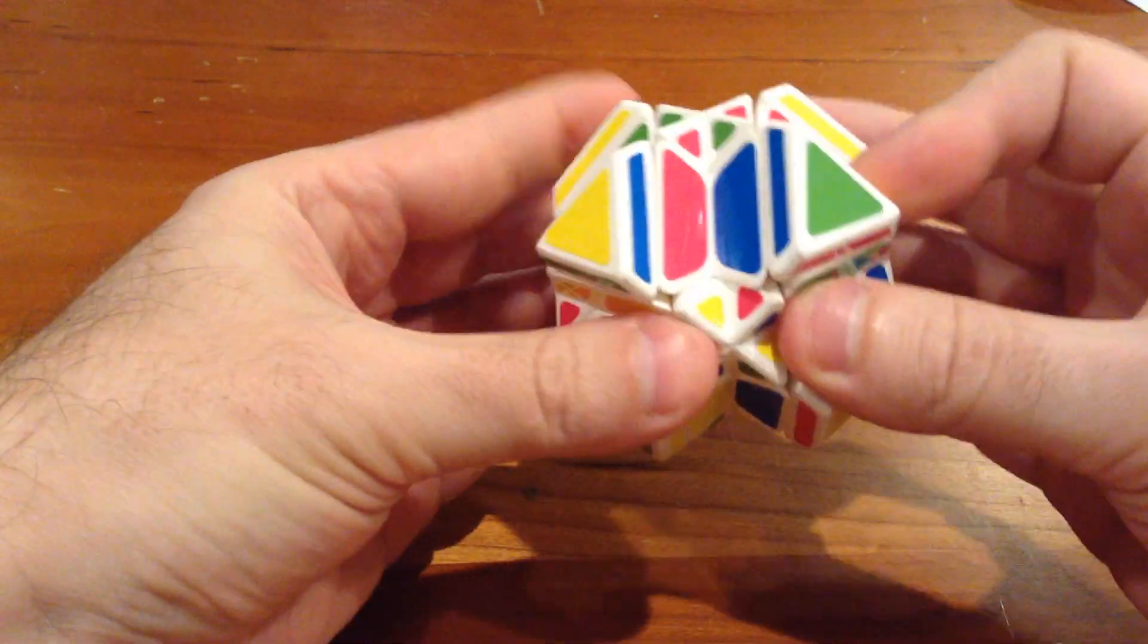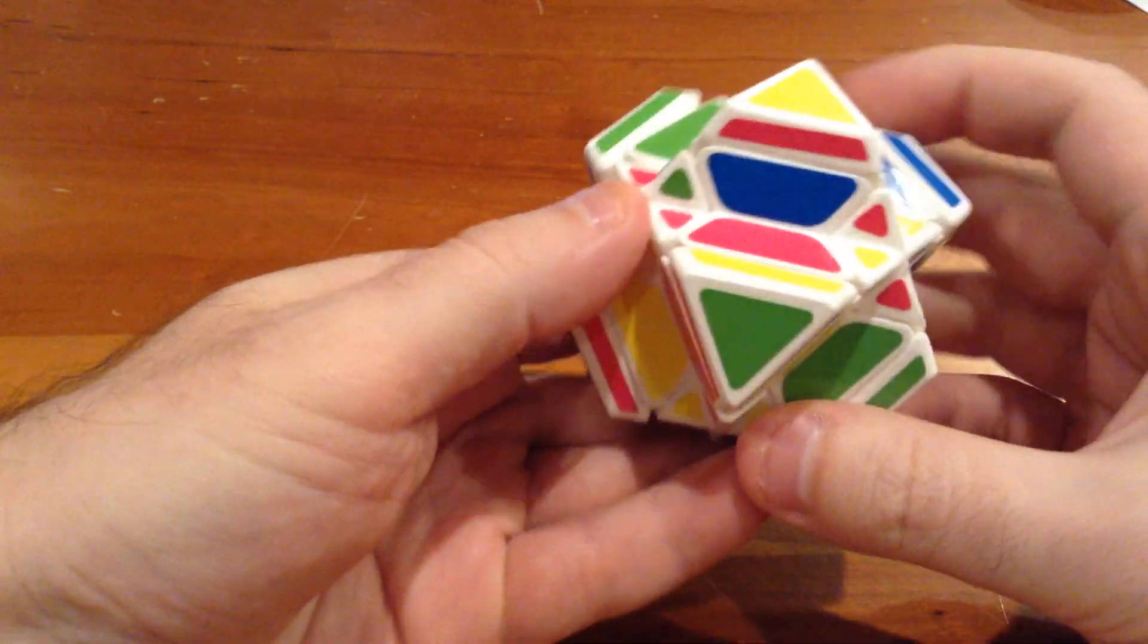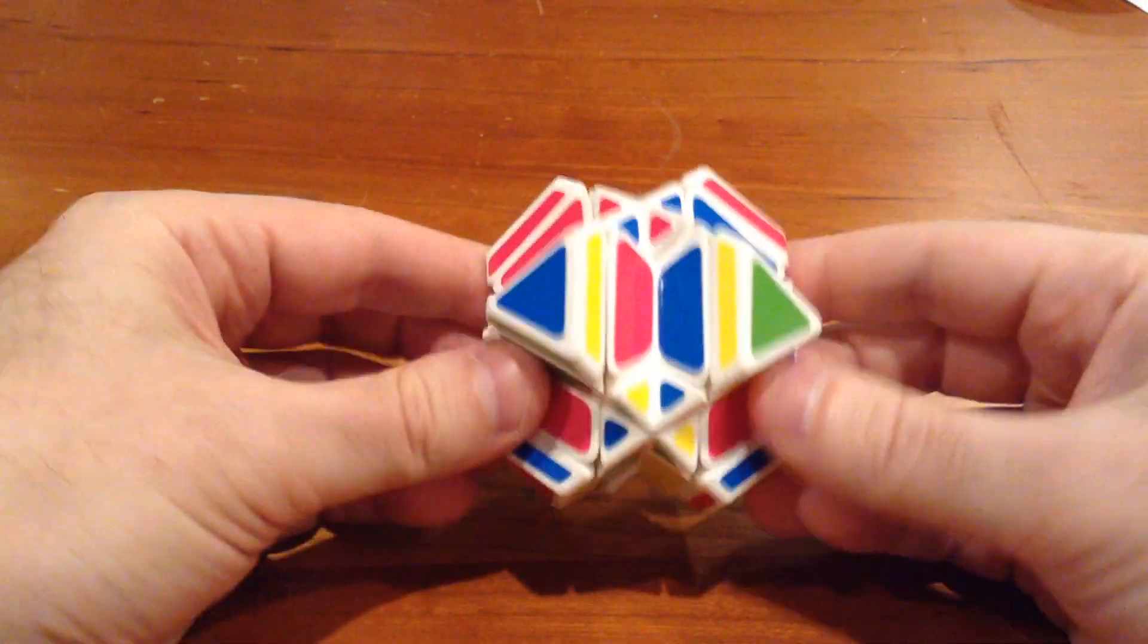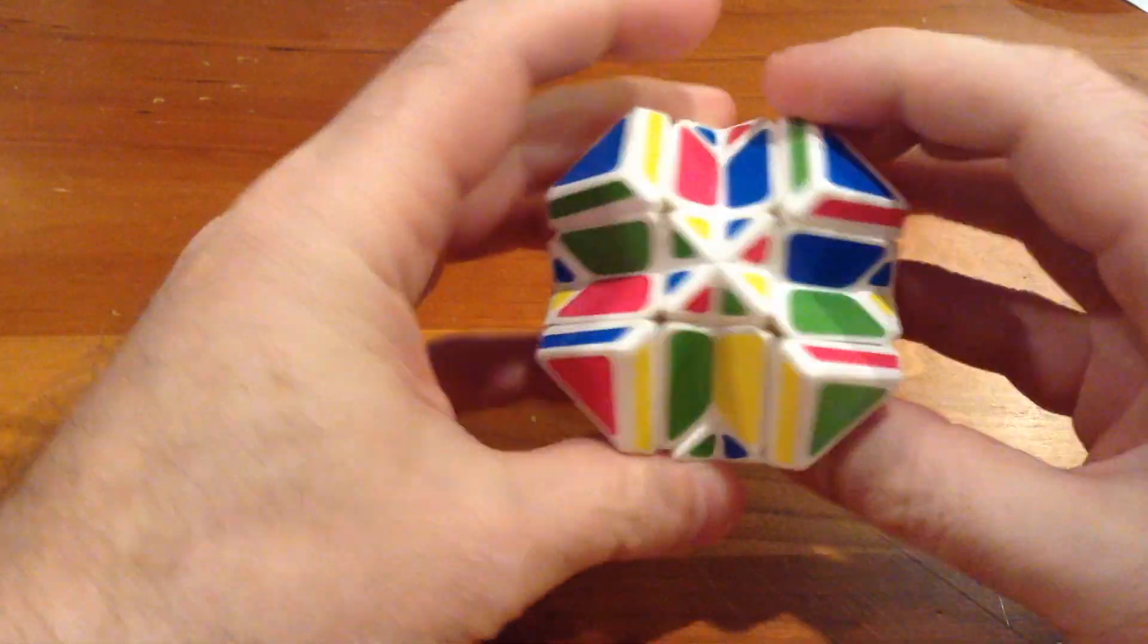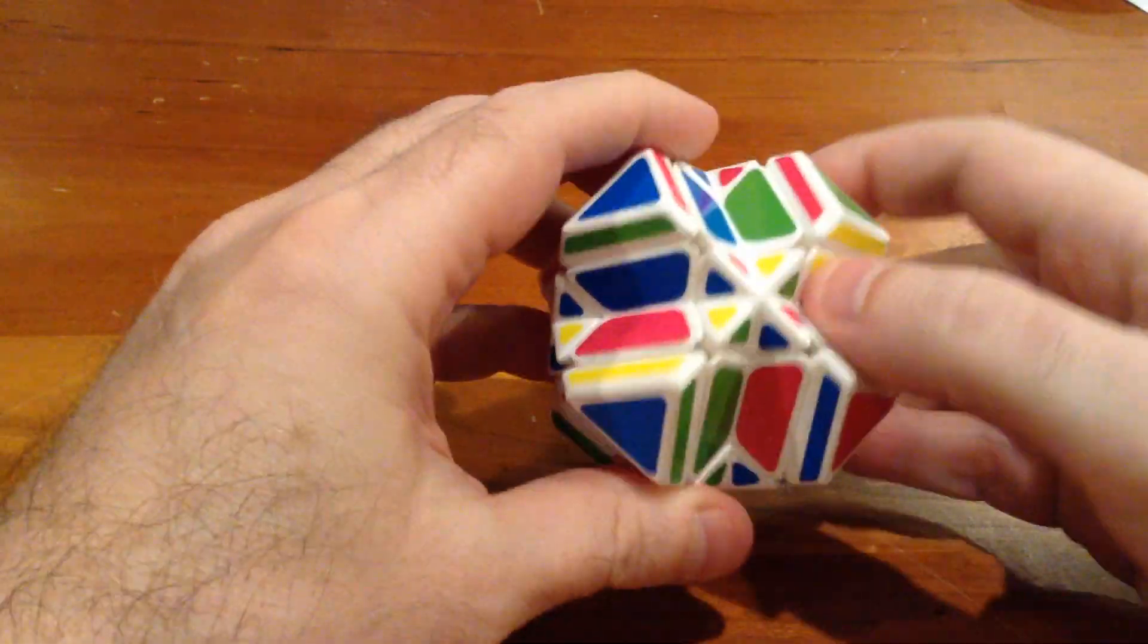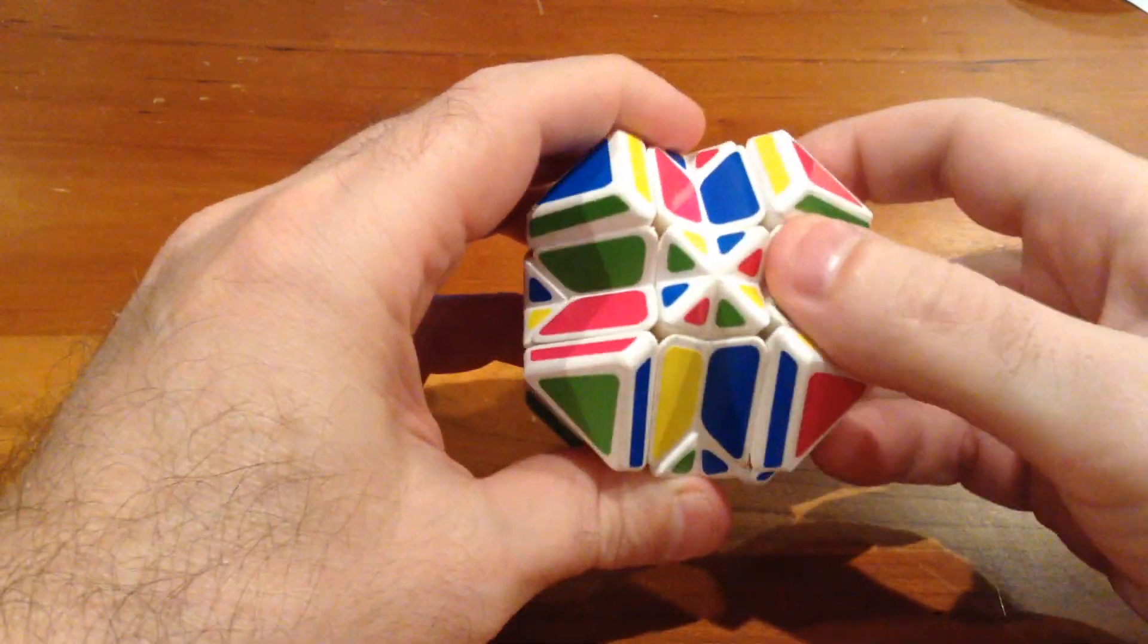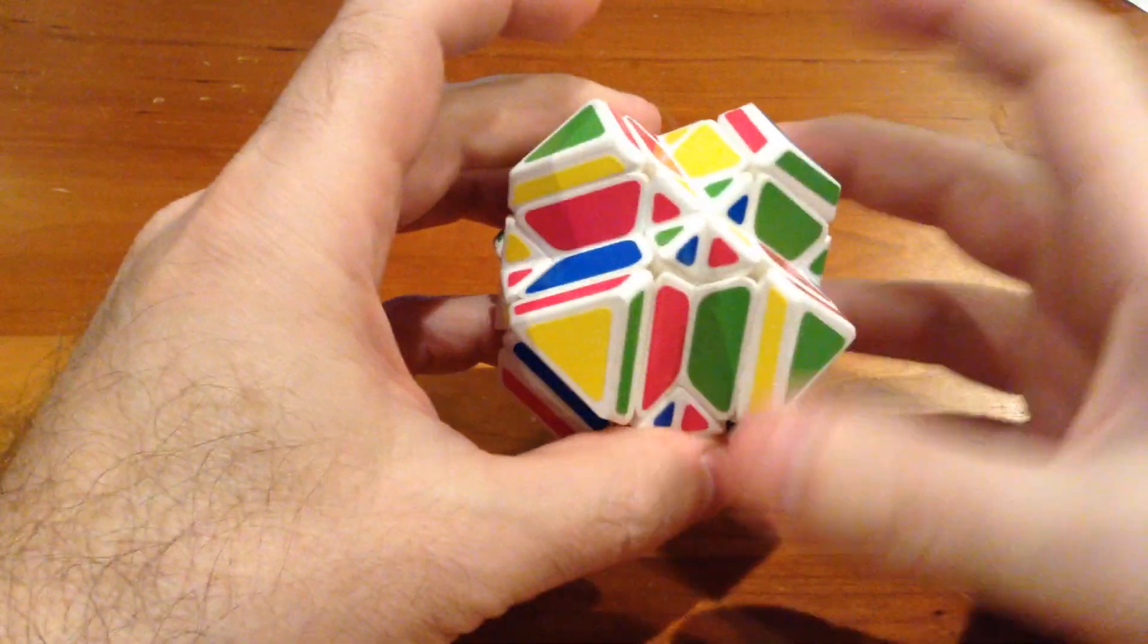And it doesn't take long for this one to get very scrambled looking. So here we go. Now, normally if you solve, and this is a 3x3 if you haven't realized that, so it will solve like a 3x3. It's just a little bit different for the identification of what things are.